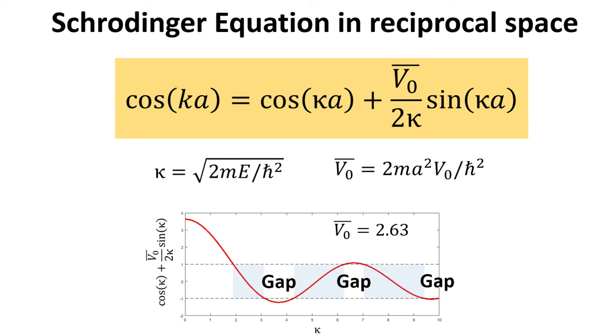More relevant to us is the so-called dispersion relation, the energy-momentum relation for Bloch electrons. Such relation is also obtained by solving the yellow highlighted equation for the energy for varying k.